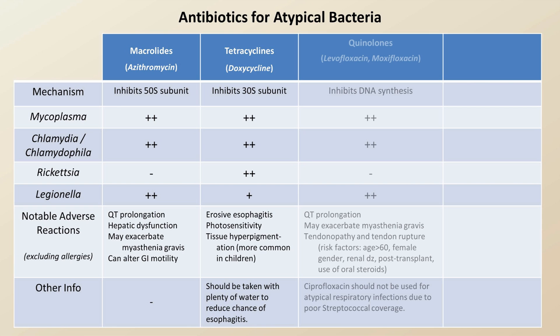The quinolones are next. These cover everything well except Rickettsia. Quinolones cause QT prolongation and may exacerbate myasthenia gravis as well, and can cause tendinopathy and tendon rupture, which is most common in patients over 60, women, patients with renal disease, patients who are post-organ transplant, and patients on oral steroids.